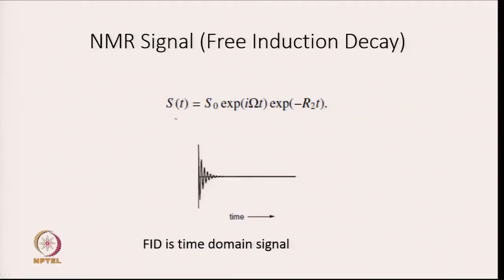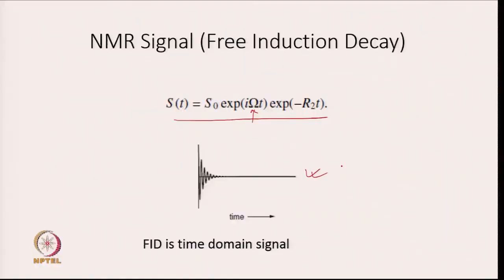In the last lecture, I showed you that the signal in NMR is given by this equation: S at a given time is equal to S naught multiplied by exponential i Omega, which is basically chemical shift, multiplied by time, multiplied by exponential minus R2 into T. This signal is called free induction decay and it is a time domain signal.